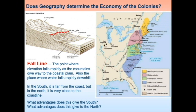How much does geography determine the economy of the colonies? I'm going to introduce you to a term you may or may not know — the fall line. The fall line is a geographical point where the elevation falls rapidly as the mountains give way to the coastal plain leading to the ocean. It's also the place where water falls rapidly downhill.